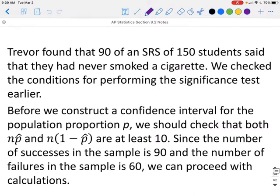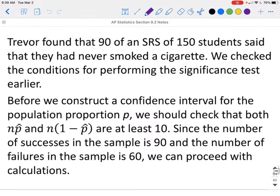So we're back to Trevor's example. He surveyed 150 students in his school and found that 90 of them said they have never smoked a cigarette. We checked the conditions for performing the significance test earlier, so we know those conditions were met. Before we construct a confidence interval for the population proportion P, we should check